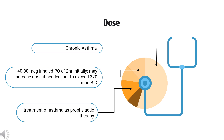How to use beclomethasone? For chronic asthma, indicated for maintenance treatment as prophylactic therapy. With no prior history of inhaled corticosteroid use: 40–80 micrograms inhaled PO Q12HR initially, may increase dose if needed, not to exceed 320 micrograms per day. With prior history of inhaled corticosteroid use: 40–160 micrograms inhaled PO Q12HR based on previous inhaled corticosteroid product and disease severity, not to exceed 320 micrograms per day.